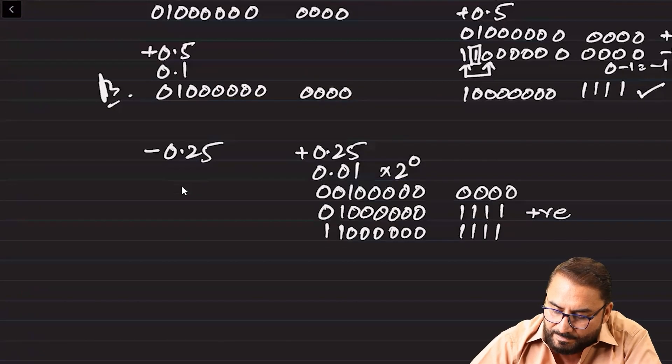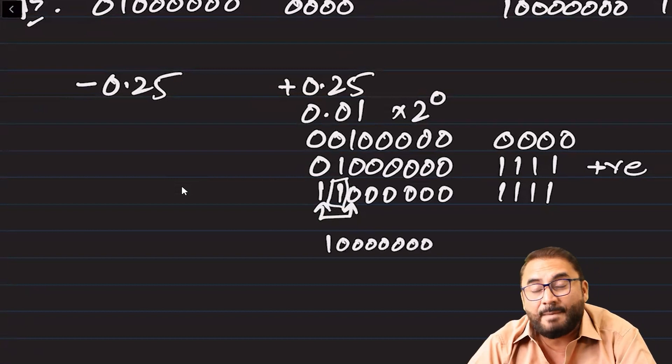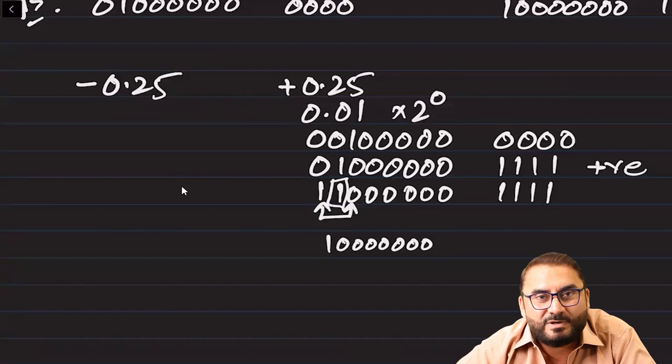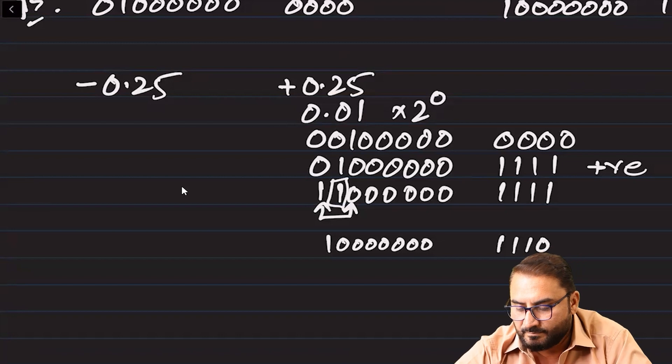However, sometimes after negating you may find the result is non-normalized again — requiring a second normalization. In such cases you normalize again: identify the same first two bits, remove the repeated bit, and subtract 1 more from the exponent, giving minus 2 in 4-bit two's complement. This means you may need to normalize twice, especially when dealing with numbers less than 1, whether positive or negative. That's the complete explanation of floating-point normalization.